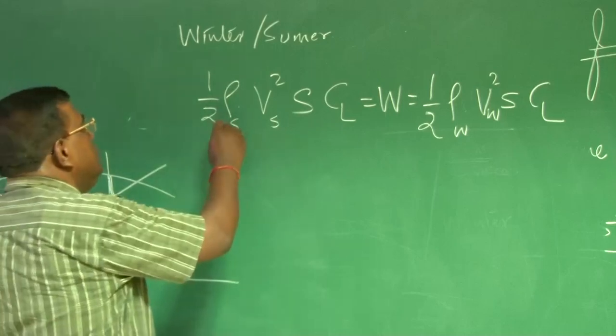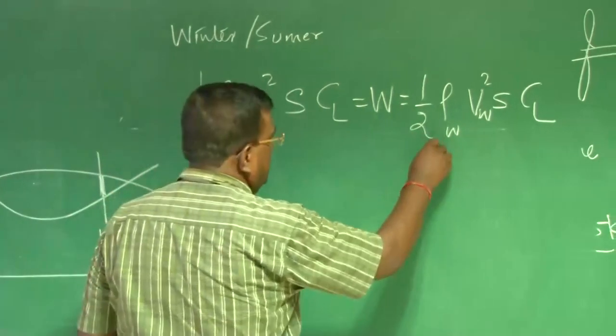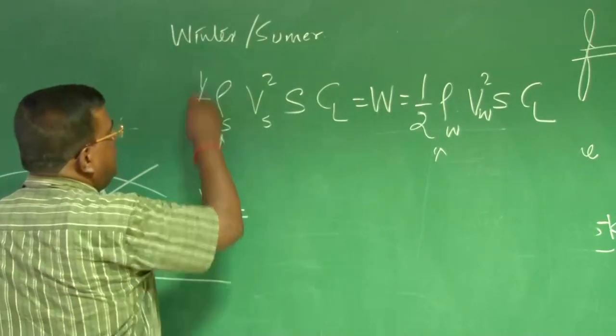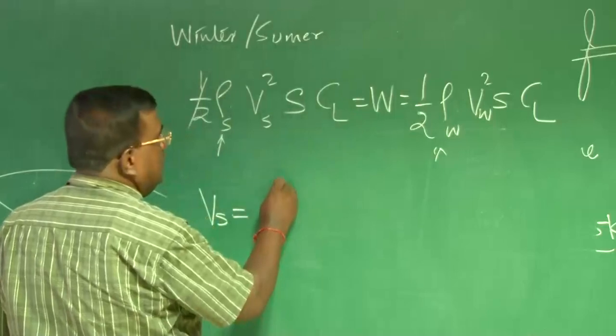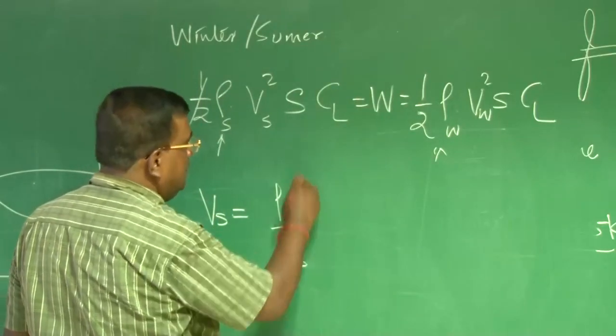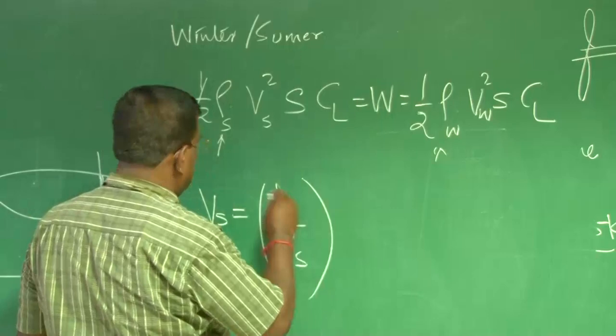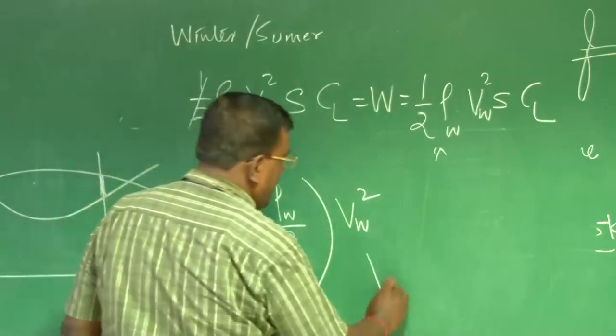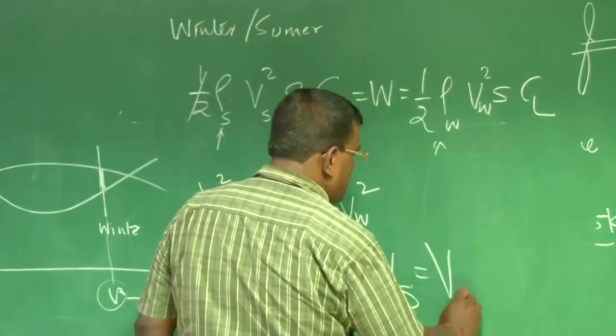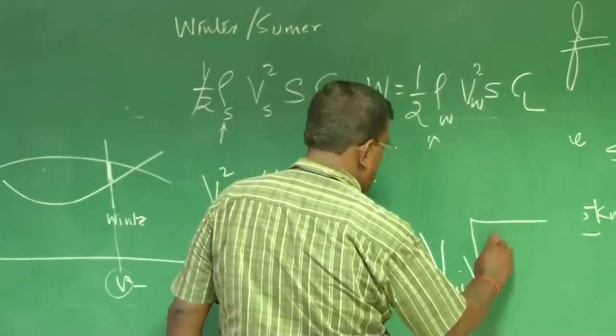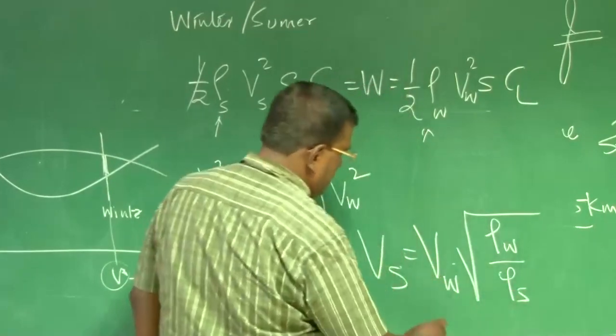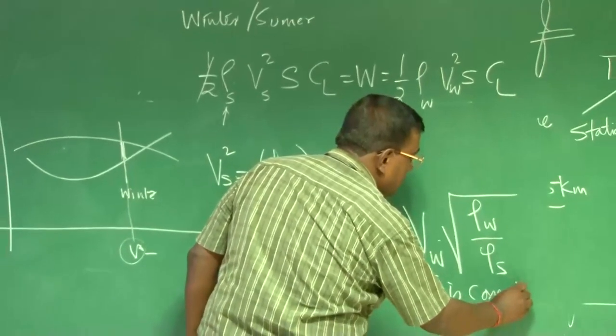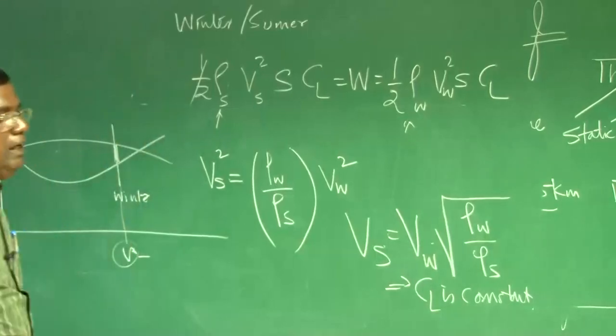The key point is rho summer and rho winter are different. So what will happen? V summer required will be, half half up goes off, it will be rho winter by rho summer into V w square or V summer will be V w into square root of rho winter by rho summer. I am assuming CL is constant.